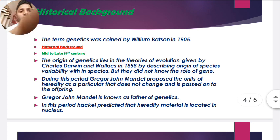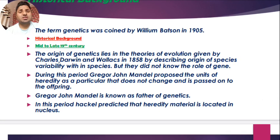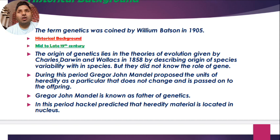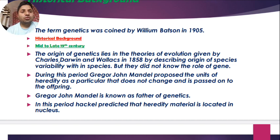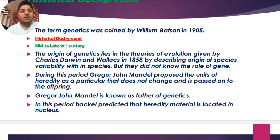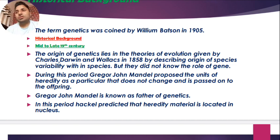When we discuss the historical background, we divide the history into different parts. First, the mid to late nineteenth century. The origin of genetics came from the theories of evolution given by Charles Darwin and Wallace in 1858. They gave the concept of species and the variability of species — how different species are formed — in the 'Origin of Species.' However, they did not fully know the role of genes at that time.